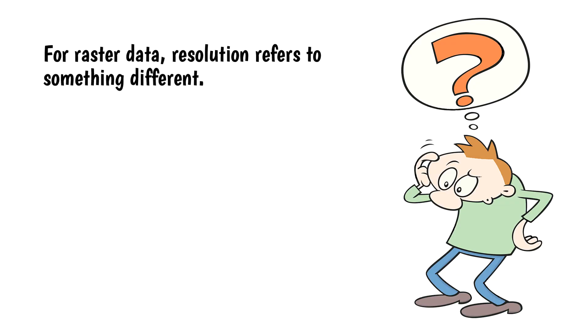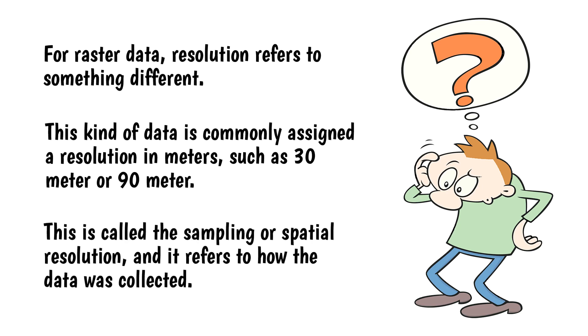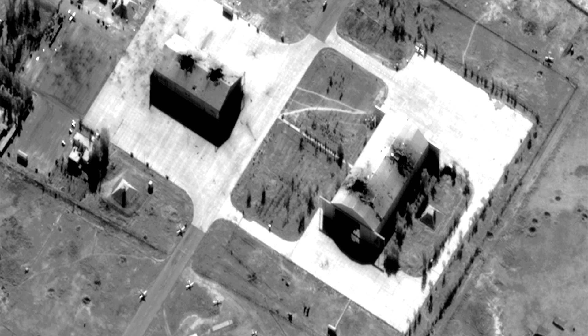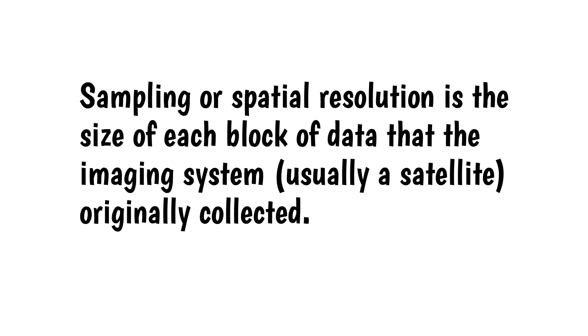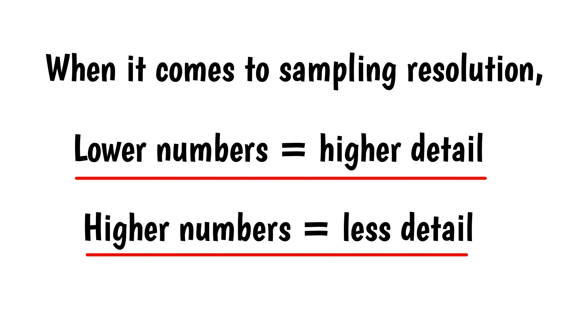For raster data, resolution refers to something different. This kind of data is commonly assigned a resolution in meters, such as 30 meter or 90 meter. This is called the sampling or spatial resolution, and it refers to how the data was collected. You may have heard of spy satellites having a resolution of 1 meter — this means the images it collects can distinguish objects as small as 1 meter in size. That's how sampling resolution works. It's the size of each block of data that the imaging system, usually a satellite, originally collected. When it comes to sampling resolution, lower numbers equals higher detail; higher numbers equals less detail.